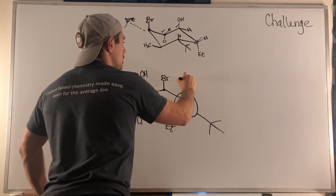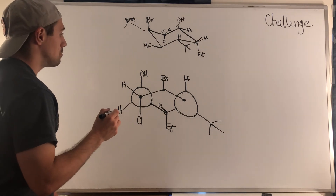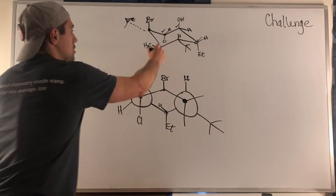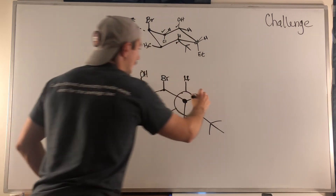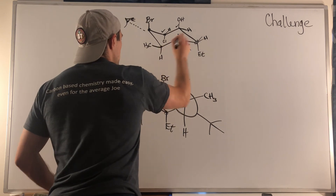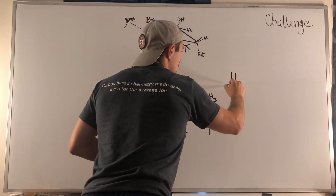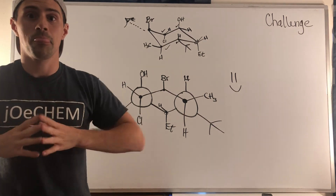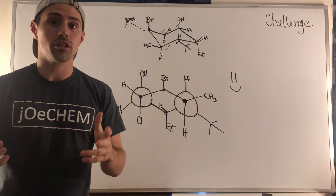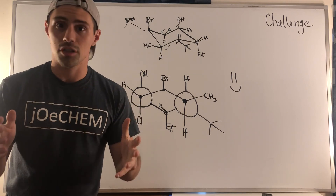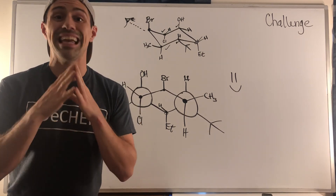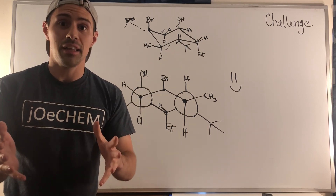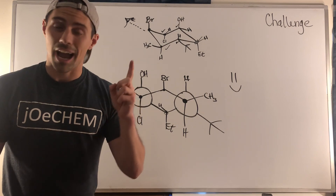Moving to the circle back carbon: the OH group faces up, and the down equatorial H is filled in below. The next back carbon has a methyl group facing down and an up equatorial H. Then the equatorial t-butyl group is down with an axial up H. Finally, the last dot carbon has an up axial CH3 and a down axial H. With all groups filled in, we have fully drawn the Newman projection for this highly substituted cyclohexane chair. Thank you so much for supporting JoChem — I hope to see you in the next video.